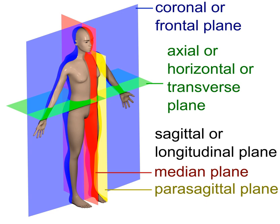The description of the coronal plane applies to most animals as well as humans, even though humans walk upright and the various planes are usually shown in the vertical orientation. The sternal plane is a coronal plane which transects the front of the sternum.